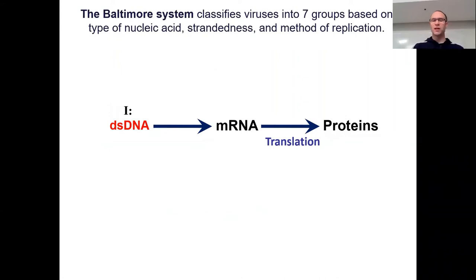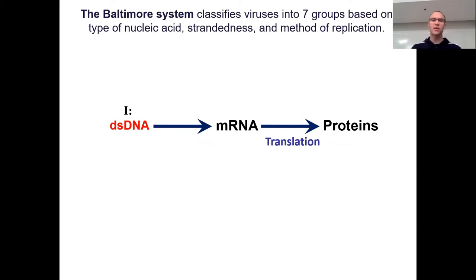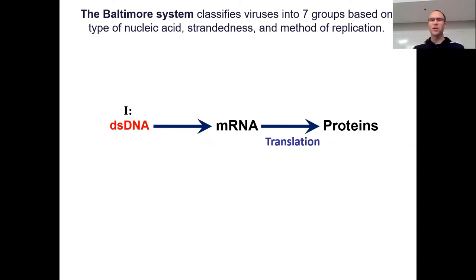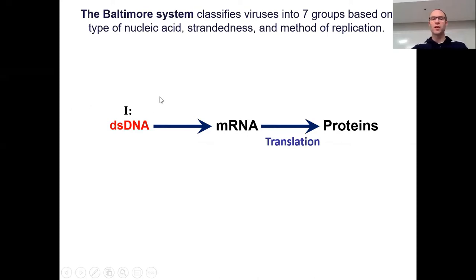Some viruses are double-stranded DNA viruses - that's what DS stands for, double-stranded. These are replicated in a cell very similar to the way we replicate our DNA, then it makes RNA, and then we translate that into proteins. These types of viruses are usually done in the nucleus because that's where we have all our DNA enzymes.